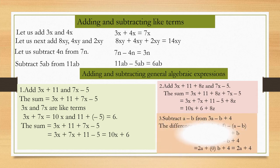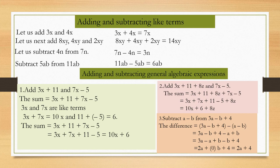Third question: subtract a minus b from 3a minus b plus 4. The difference equals 3a minus b plus 4 minus (a minus b). We need to add the additive inverse of (a minus b), which is minus a plus b. Therefore, it becomes 3a minus b plus 4 plus minus a plus b, giving 2a plus 0b plus 4, that is 2a plus 4.